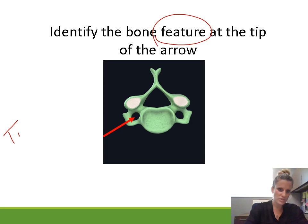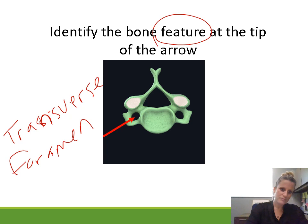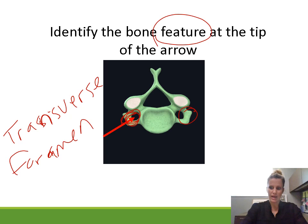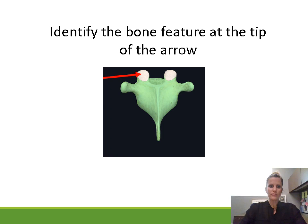Identify the bone feature. This is specifically pointing to the transverse foramen — the little hole in the transverse process of a cervical vertebra. The whole thing is a transverse process, and the little hole inside it is the transverse foramen.